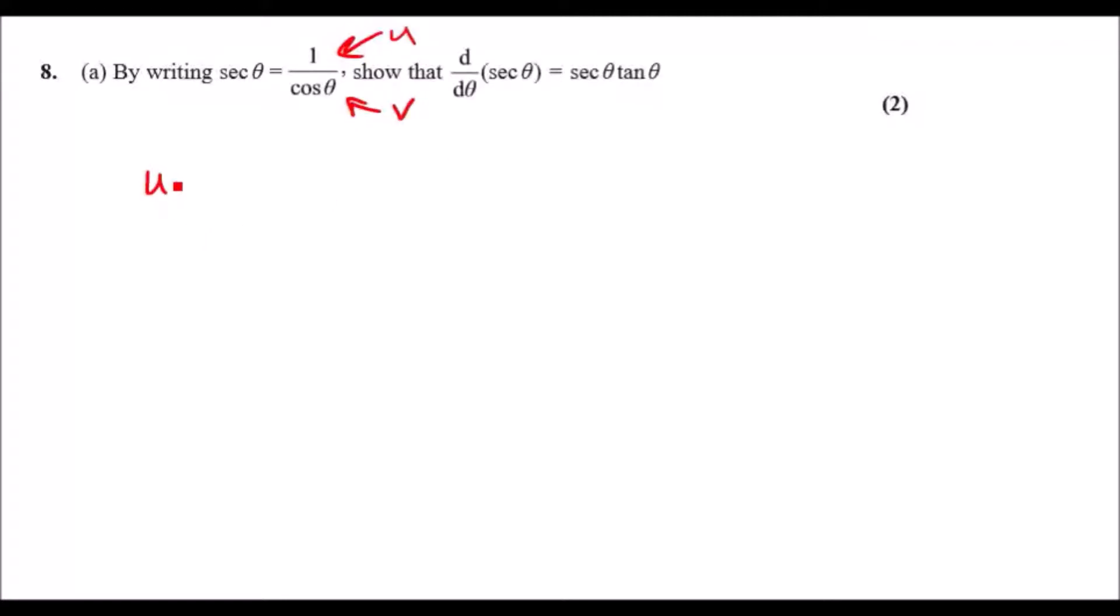So we can say let u equal 1 and v equals cos θ. Now differentiating both of them: u gives you zero because it's a constant, and differentiating cos is easy, it's going to be negative sine. The reason for these two is that differentiating cos and sine always cycles back to each other.